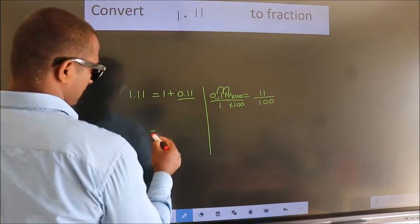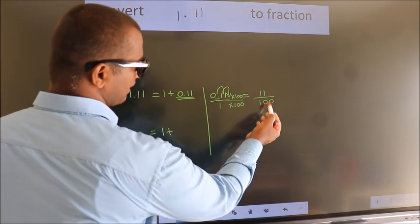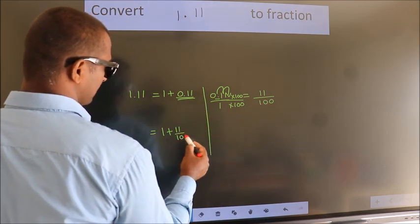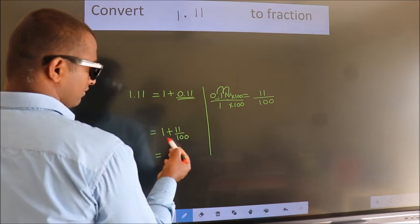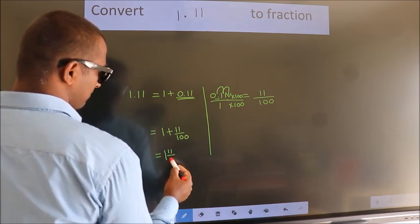Next, here, 1 plus, in place of 0.11, now I write this fraction, 11 by 100. So, 1 plus 11 by 100 in mixed fraction is 1, 11 by 100.